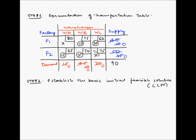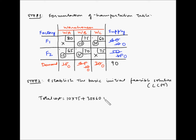Now let us find the total cost of transportation. The total cost equals: 10 units × $75 (F1 to WB) + 30 units × $60 (F1 to WC) + 15 units × $65 (F2 to WA) + 35 units × $70 (F2 to WB), which equals $5,975.